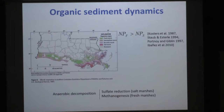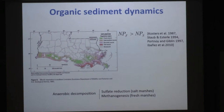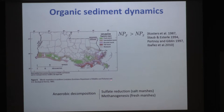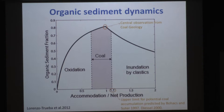An important point is that net productivity can vary greatly depending on location on the deltaic plain. Fresh marshes have significantly larger net productivity than salt marshes, as reported in the literature. This difference is explained primarily by differences in decomposition rates: in salt marshes we have sulfate reduction, while in fresh marshes we have methanogenesis. Methanogenesis is a less energetically favorable reaction than sulfate reduction, so decomposition in fresh marshes is slower, allowing greater preservation of organic matter.